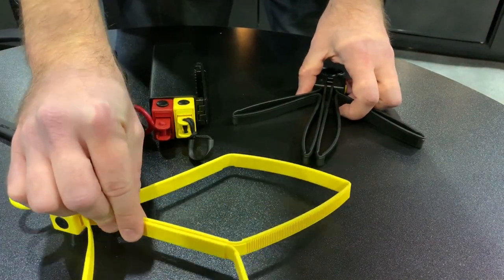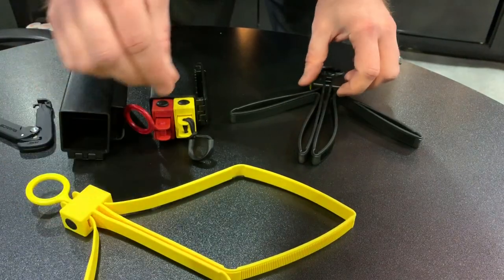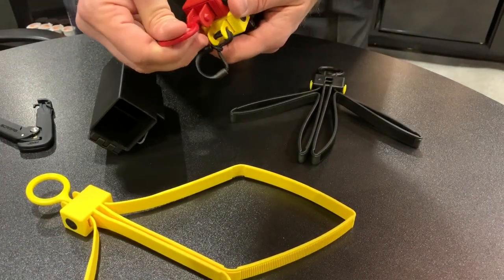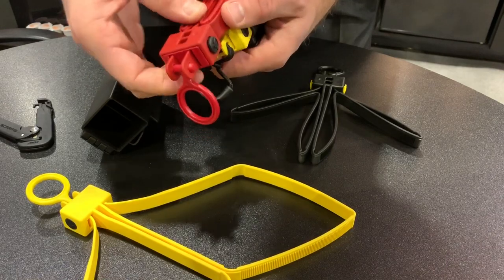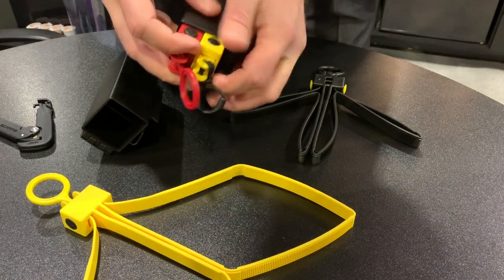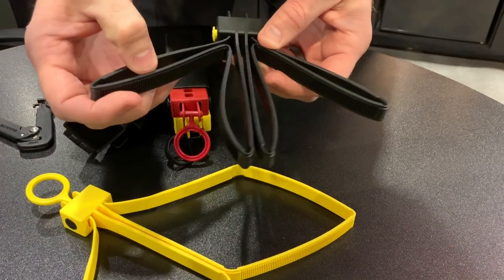Yellow is ideal if you have to write on the strap itself to identify who's wearing it. Our red is our training tri-fold, so it can be reused during training sessions. And our traditional black is our most popular tri-fold disposable restraint.